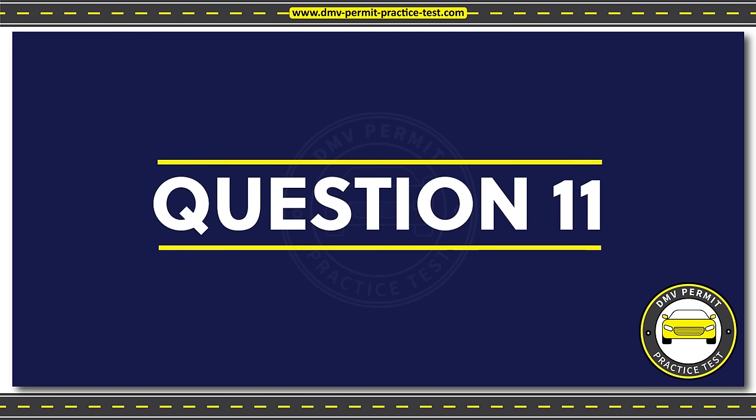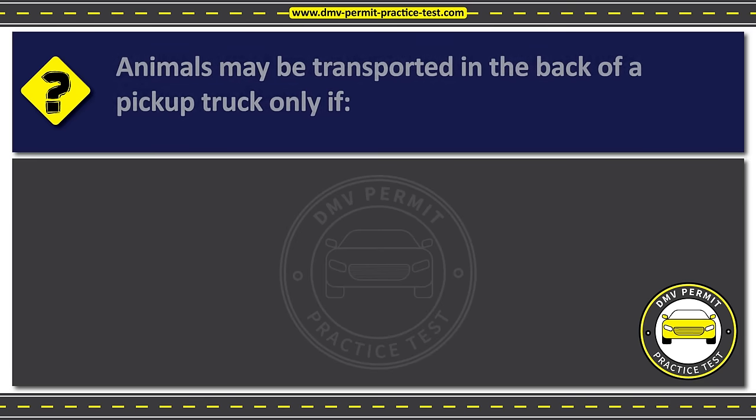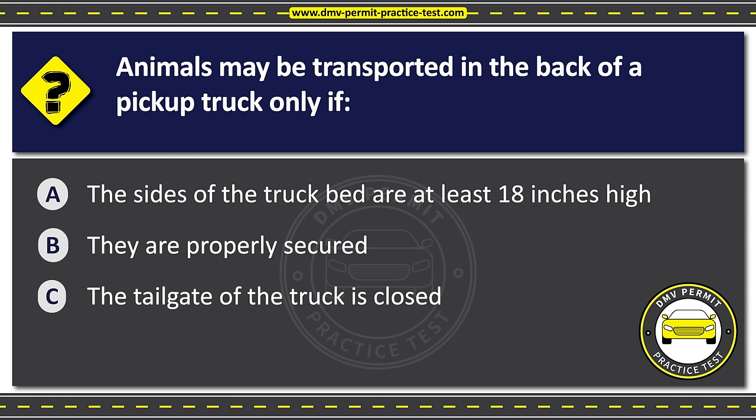Question eleven. Animals may be transported in the back of a pickup truck only if Option A: The sides of the truck bed are at least 18 inches high. Option B: They are properly secured. Option C: The tailgate of the truck is closed. The correct answer is Option B: They are properly secured.